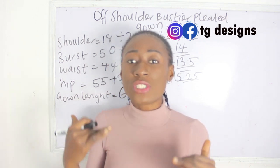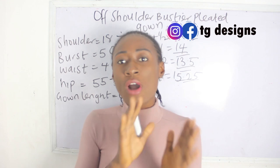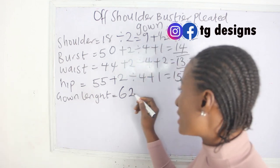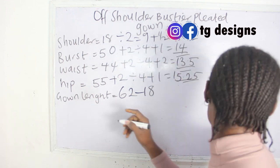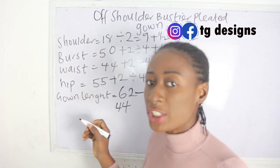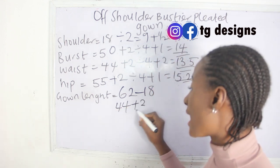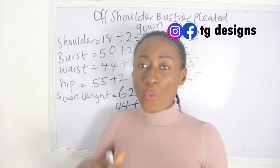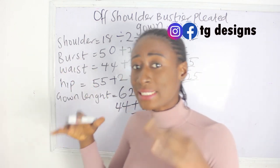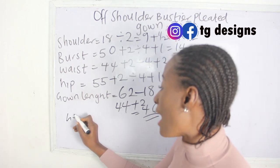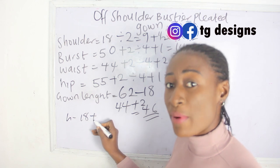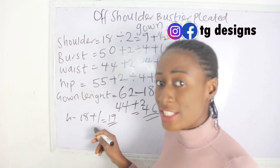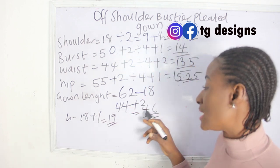To determine how many inches you need for your pleats, deduct your half length from your gown length. If our gown length is 62 and we take off our half length of 18, we have 44 inches. We add 2 inches for sewing allowance, giving us 46 inches. Our half length is 18 inches; add 1 inch for sewing allowance and you have 19 inches. So the half length is 19 inches plus allowance, while the lower part is 46 inches.